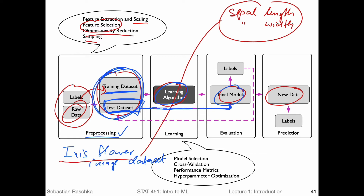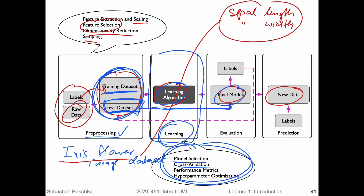I'm writing 'final model' here because in the learning steps there are also evaluation steps. There's something called model selection, cross-validation — different steps to evaluate the model during training and to tune the hyperparameters. This is something we will cover also in this course very extensively. We have about four lectures just devoted to model evaluation, selection, cross-validation, and so forth. For now, keep in mind that this already encompasses some evaluation procedure. So once we have the final model, we use our test set and evaluate the performance.